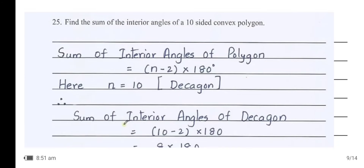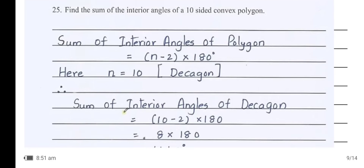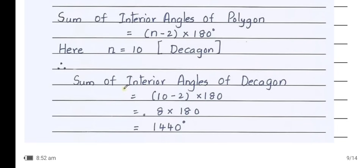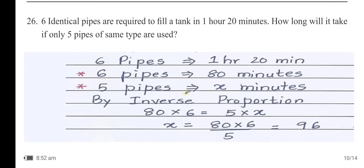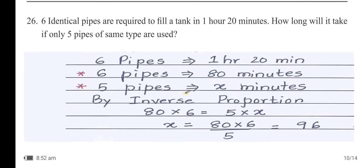Find the sum of the interior angles of a 10-sided convex polygon. The sum of interior angles of a polygon = (n − 2) × 180°. Here n = 10 (decagon), so the sum = (10 − 2) × 180° = 8 × 180° = 1440°.